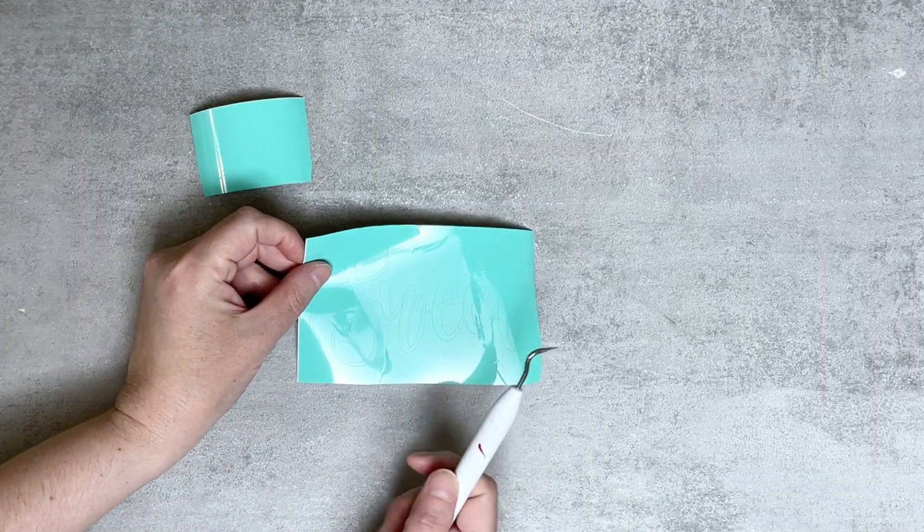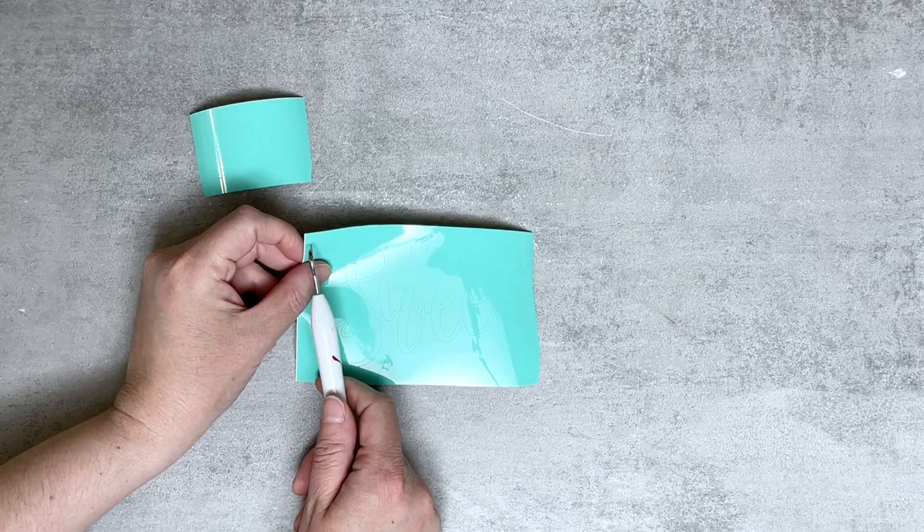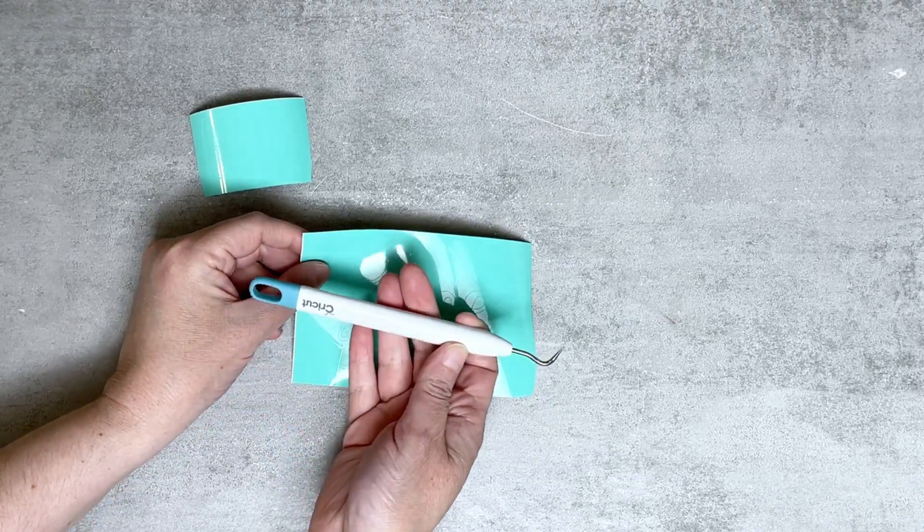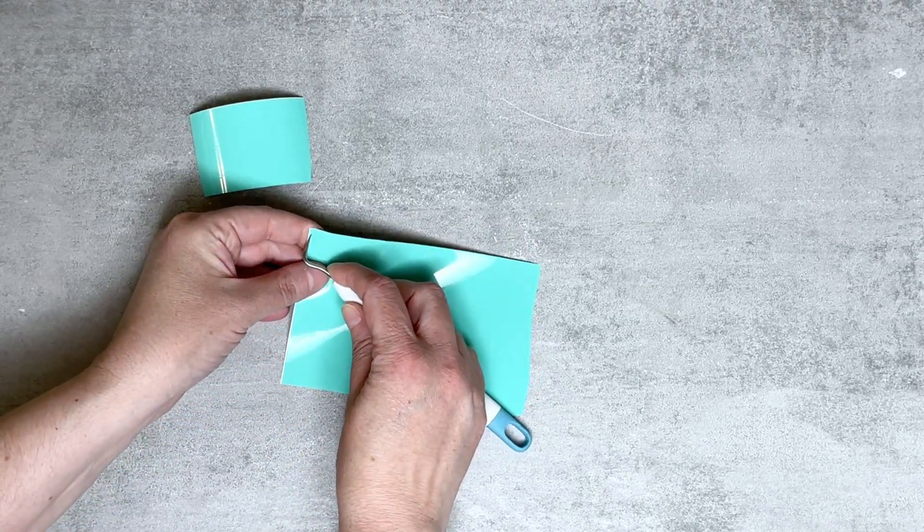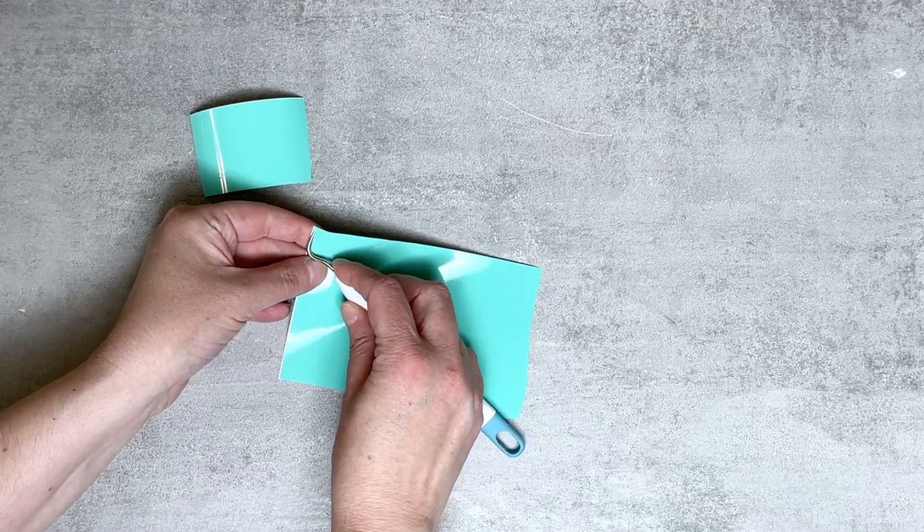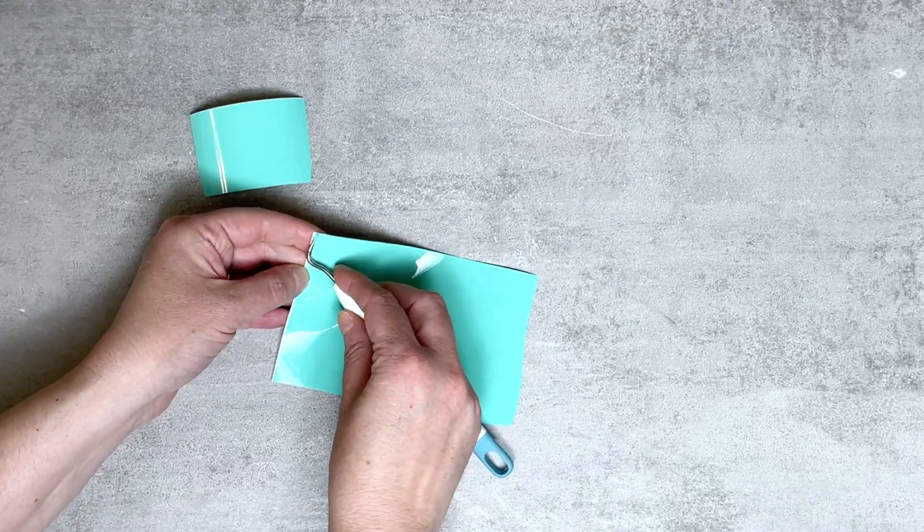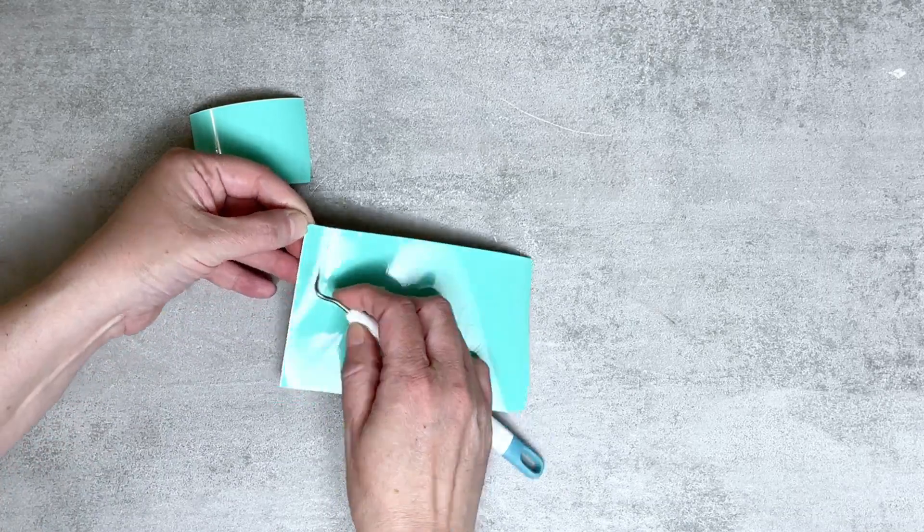We're going to go ahead and weed our project. Weeding just refers to removing the excess material from the project. I'm going to use my weeding tool and start in the corner. I'm just going to pierce it to lift it up and that helps to get it started.